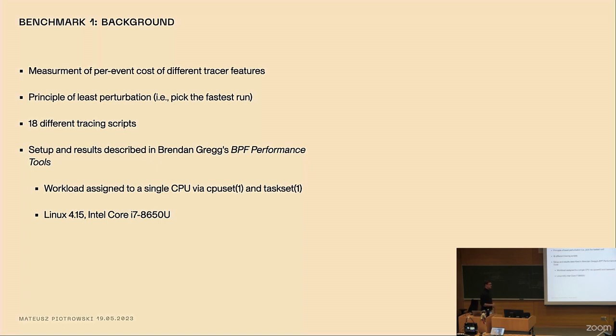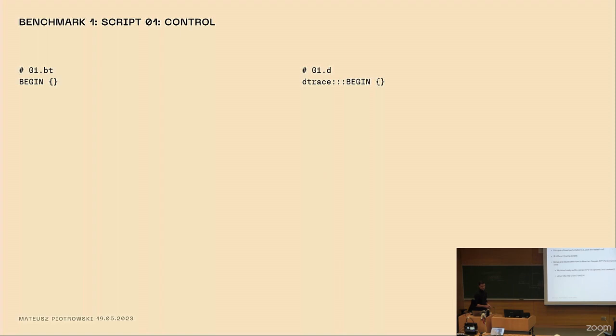The goal was the measurement of per event cost of different tracer features. I also followed the recommendation of Brendan Gregg from the book to use the principle of least perturbation, which is to pick the fastest run for the final comparison of results. This is, to those of you who know how to benchmark, this is a red flag probably. Because you don't really pick the fastest run usually, because you tend to ignore things like the tail of the distribution of your timing. But in this case, it actually makes sense because you want to see what's the overhead if everything goes perfectly. So in the best scenario, what's happening to the overhead of my system? We have 18 different tracing scripts. The setup and the results are described in this book. The workload is running on exactly one CPU together with the tracer. And Brendan's results were done on Linux 4.15 on a single core and also probably on a way older version of BPF trace. So the results you're going to see with the results I gathered for BPF trace are probably way faster than what he could achieve at that point.